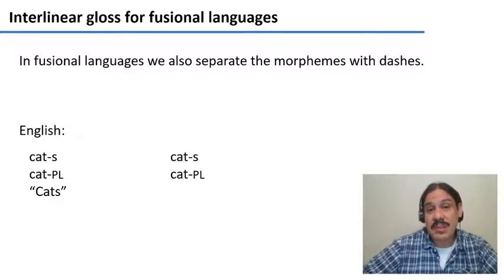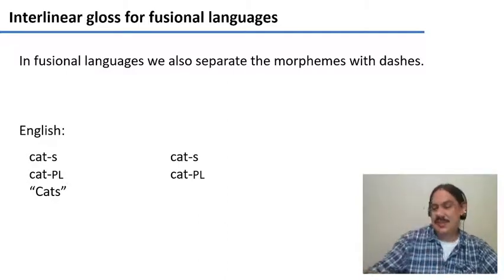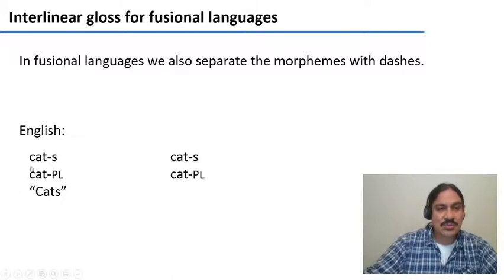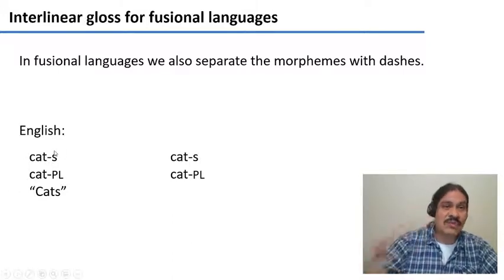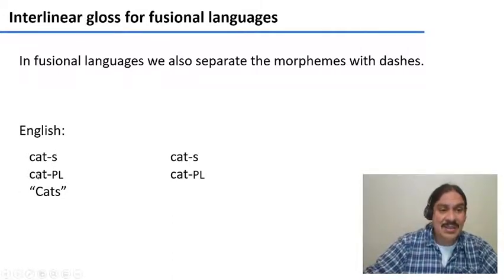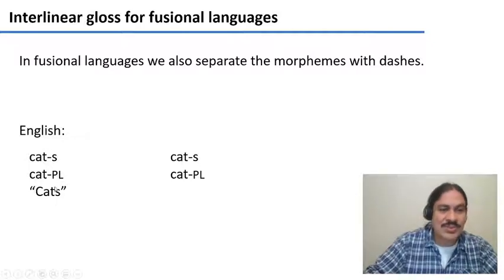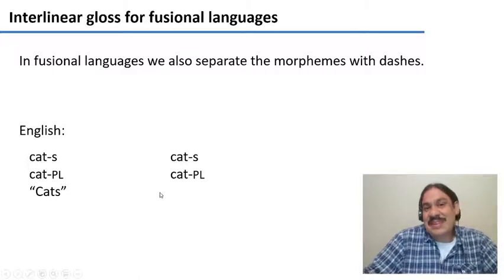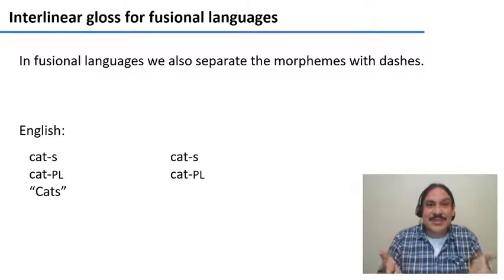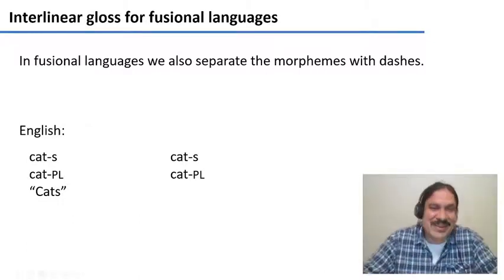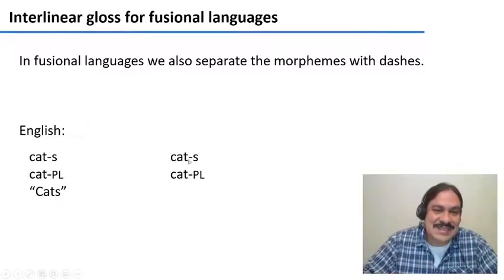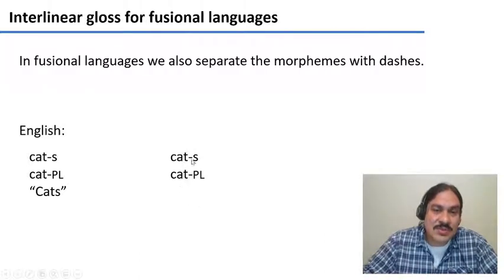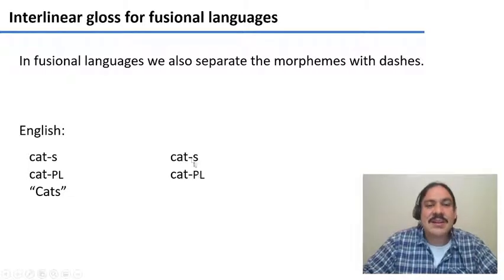For fusional languages, we would do the same thing — we separate morphemes with dashes. For example, in English, the word 'cats' contains two morphemes: the root 'cat' and the 's', which is the plural morpheme. If you're documenting the same language you're writing in — like English grammar — you don't need to translate it. What we need is a description of what each of the morphemes mean: cat, plural.